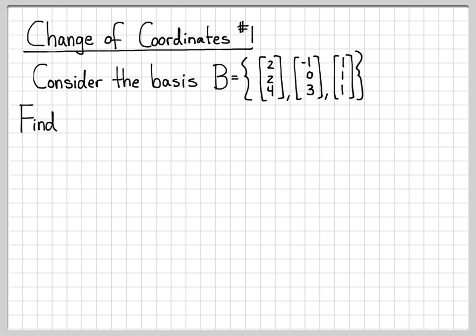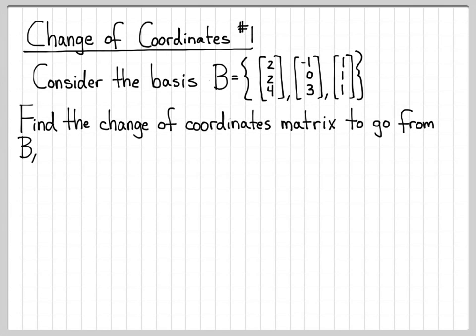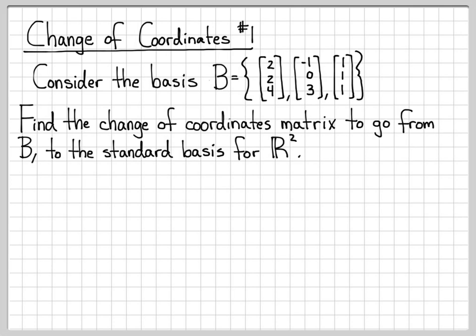So this is the basis we're going to work with. What we're going to do is find a matrix called the change of coordinates matrix that lets us go from the coordinate system represented by the basis B to the standard basis. The standard basis for R3 is just the set of vectors (1, 0, 0), (0, 1, 0), (0, 0, 1). When we don't specify the basis, we implicitly mean working with the standard basis where there's a 1 in each entry of the vector.